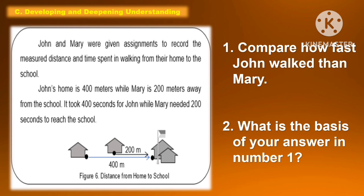John's home is 400 meters while Mary's is 200 meters away from the school. It took 400 seconds for John, while Mary needed 200 seconds to reach the school. The first question is: compare how fast John walked compared to Mary. The second question is: what is the basis of your answer in number one?